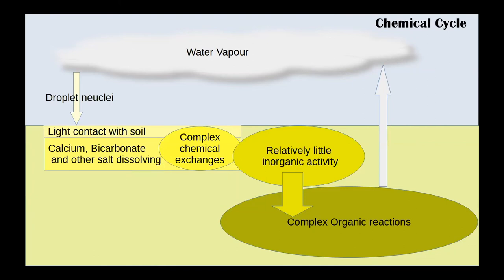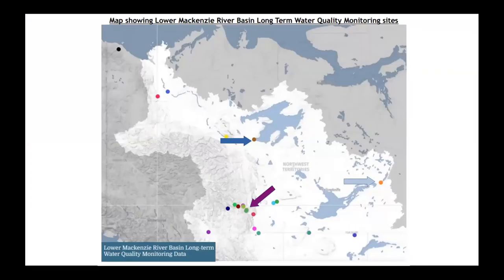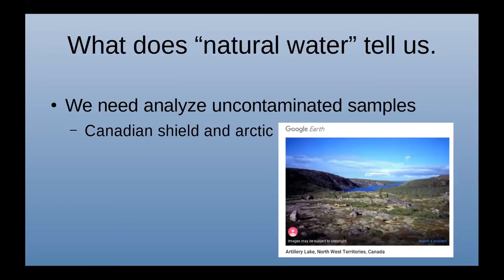To focus on the natural chemical cycle, I need to go someplace where there aren't many people. Here are 19 sites in the Northwest Territories showing data points collected by Climate Change Canada and Parks Canada over a 20-year cycle, where there isn't much human interaction. I want you to focus on three little arrows: the light blue one, the dark blue one, and the purple one. The light blue sample point is on the outlet of Artillery Lake in the Northwest Territories, where there's not much up here — mostly rock and a small lake.